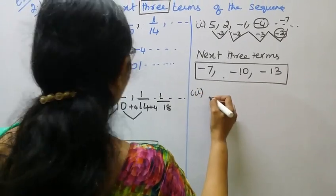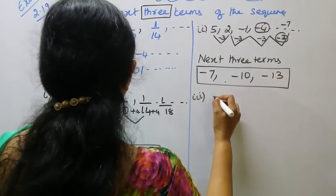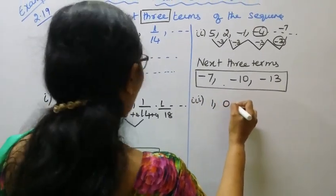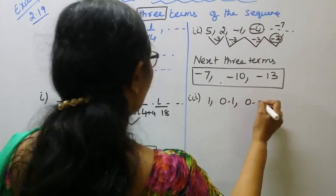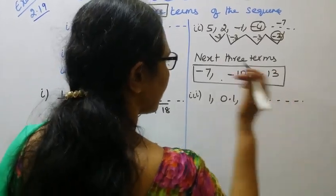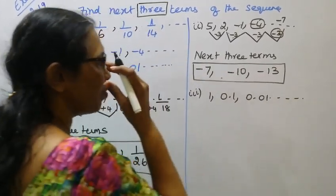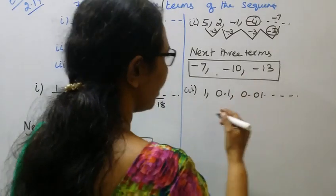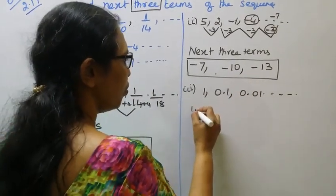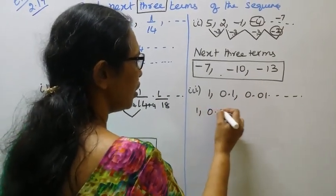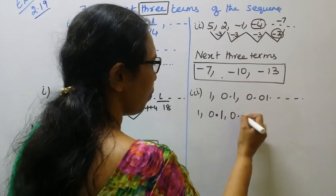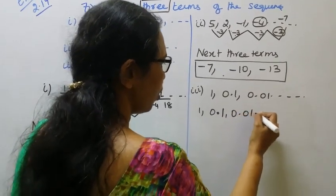Third subdivision: 1, 0.1, 0.01, and so on. Easy. The sequence is 1, 0.1, 0.01.